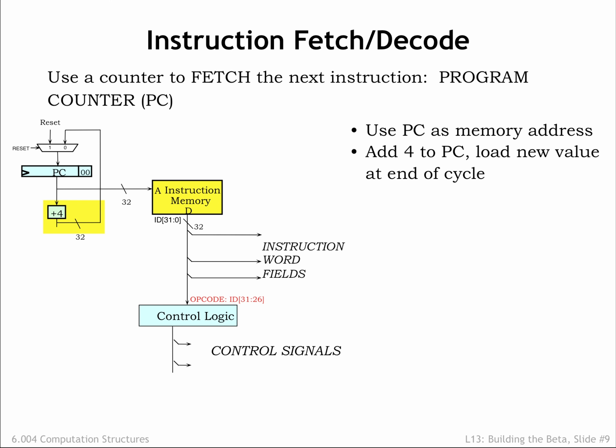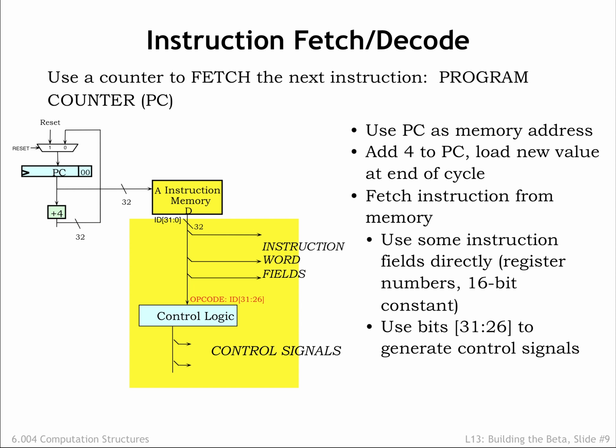We've also included a MUX used to select the initial value for the PC when the reset signal is 1. After the memory propagation delay, the instruction bits — ID 31 to 0 — are available and the processing steps can begin. Some of the instruction fields can be used directly as-is. To determine the value for other control signals, we'll need some logic that computes their values from the bits of the opcode field.